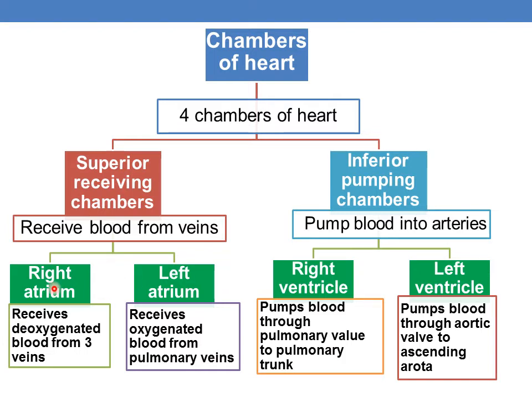Now coming to the right atrium: the right atrium receives deoxygenated blood from 3 veins. We will discuss in detail about these veins when we discuss the right atrium in the next video. So the main function of the right atrium is to receive deoxygenated, oxygen-deficit blood from 3 veins.